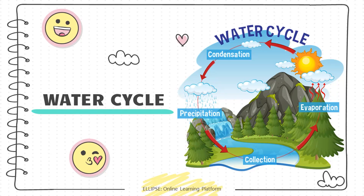This is by Ellipse online learning platform and in this video, we will be exploring the journey that water takes as it moves through our planet's ecosystem. From raindrops to rivers, from lakes to oceans, we will take a deep dive into the science behind the water cycle and learn how it shapes our environment. So let's get started.